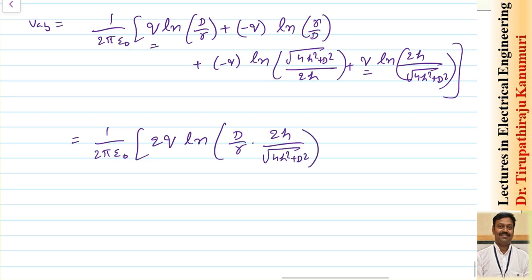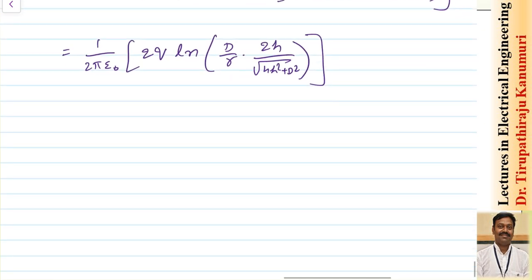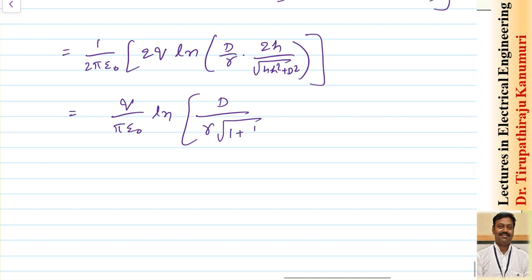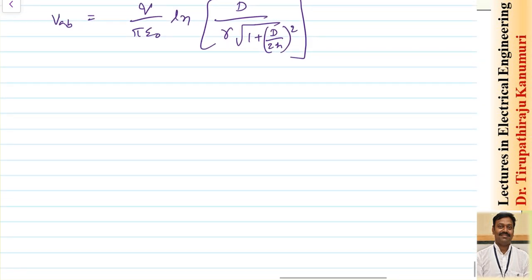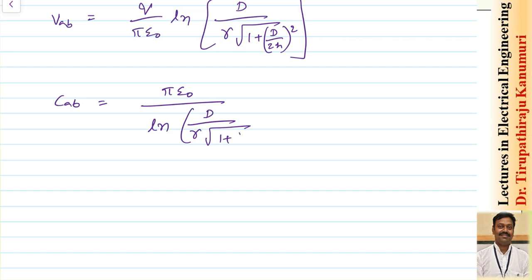Wherever q is there, I have combined them together. The minus q terms: taking the minus inside causes numerator and denominator to interchange, so they become plus q times the same factor. That is why d over r is repeating two times and 2h over √(4h²+d²) is repeating two times — that is why I have written 2q. This I can write as q over π ε₀ into ln of d over r times √(1 + (d/2h)²). So this is my value of VAB, from which I can calculate my capacitance CAB.